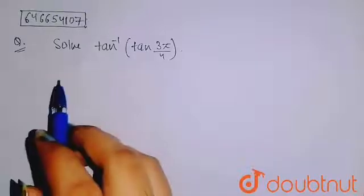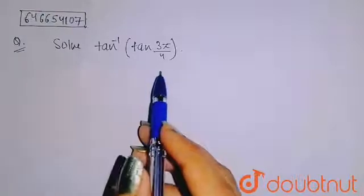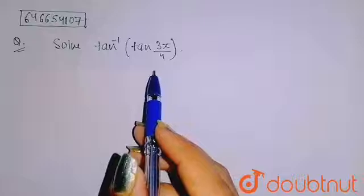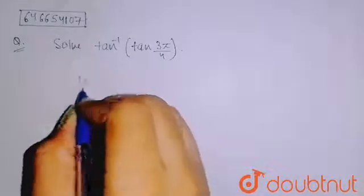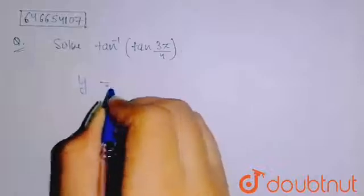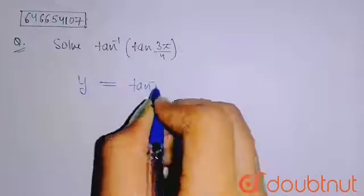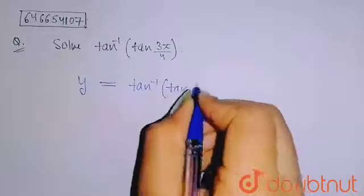It is given to solve tan inverse tan 3π by 4. Now here, if I take this part equal to y, so my y equals tan inverse tan 3π by 4.